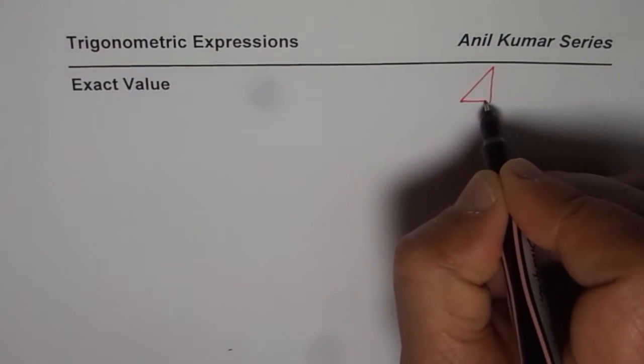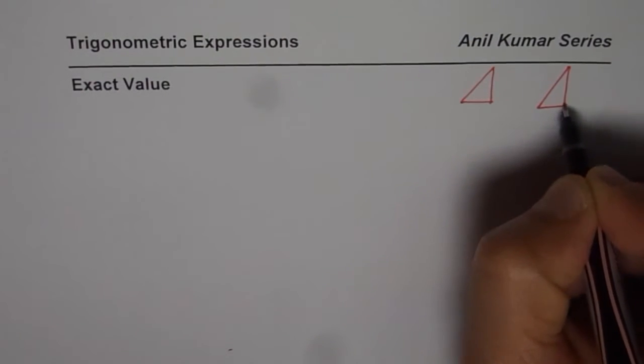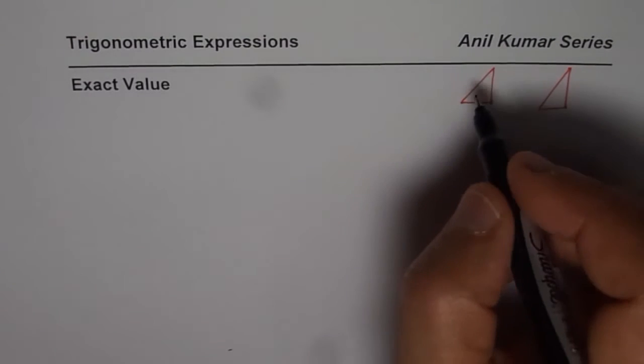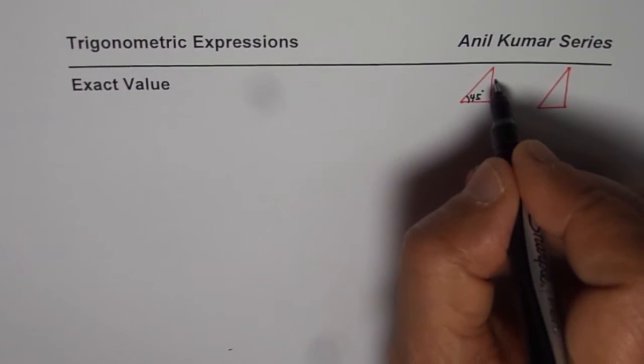These are pi by 4 or you can say 45 degrees triangle, or it is 30, 60, 90 or you can say pi by 3, pi by 6 triangle.